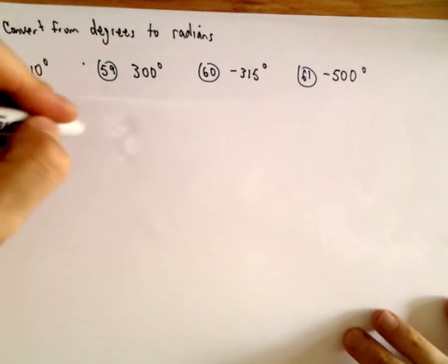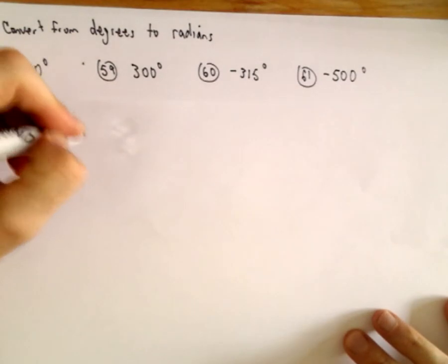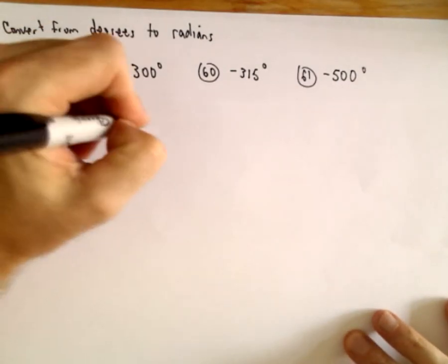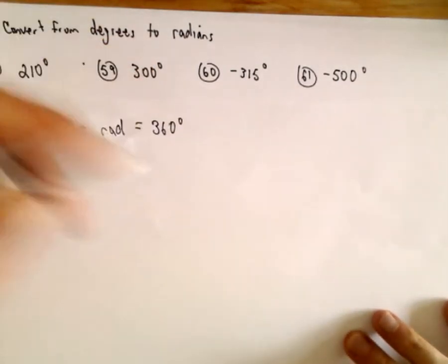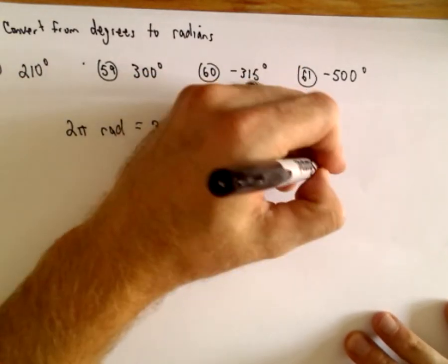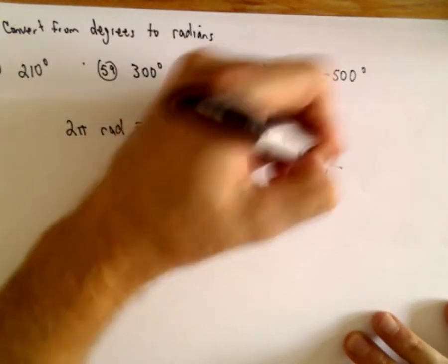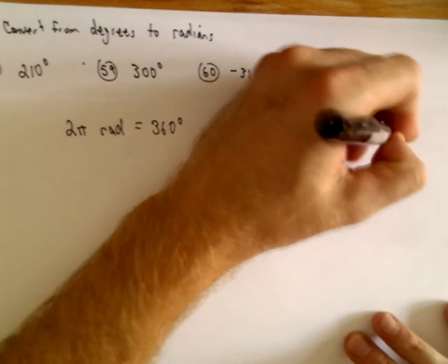So recall that 2 pi radians is equivalent or is equal to 360 degrees. And that just again comes from the unit circle, the circle of radius 1. The circumference formula is 2 pi times the radius.